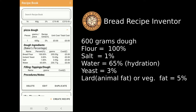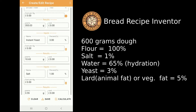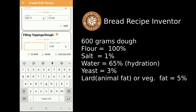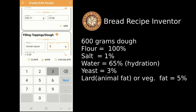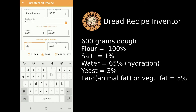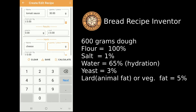If you want to add additional ingredients to your bread — like a filling or topping — you just need to edit the recipe. For this pizza dough example I'm going to add two toppings: tomato sauce at about 30 grams, and then cheese. For this 600-gram dough I'm going to put in 100 grams of cheese.